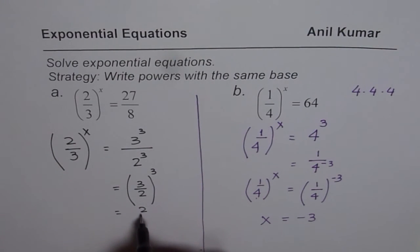When you flip this, write this as 2 over 3, then exponent becomes negative. And that gives you the solution that is x should be equal to negative 3, correct? That is how you can solve such questions.